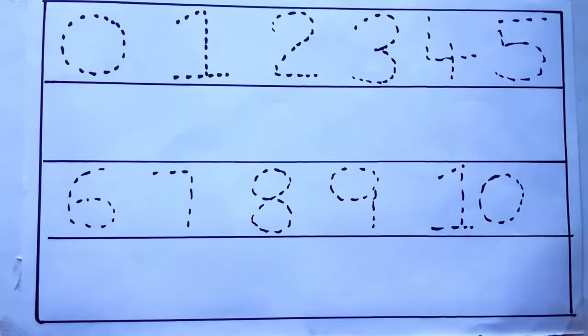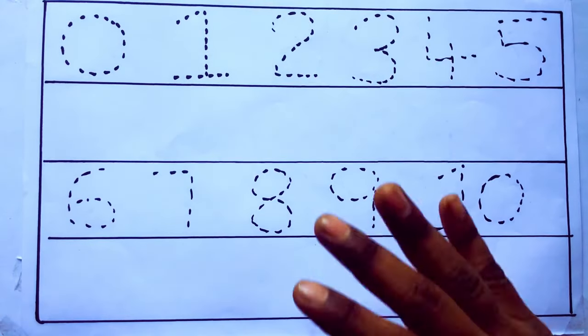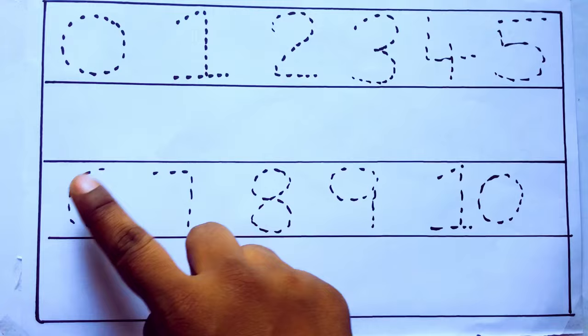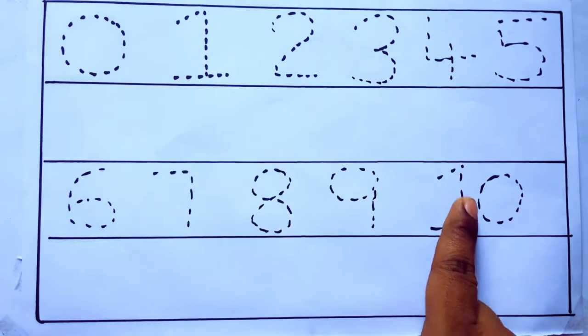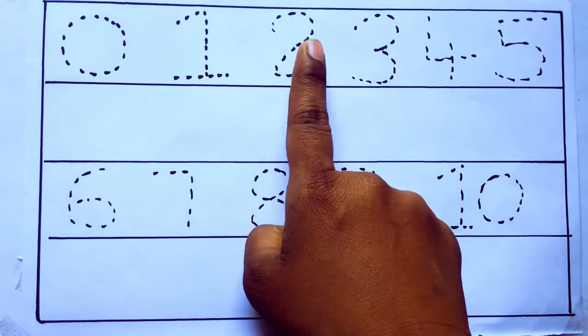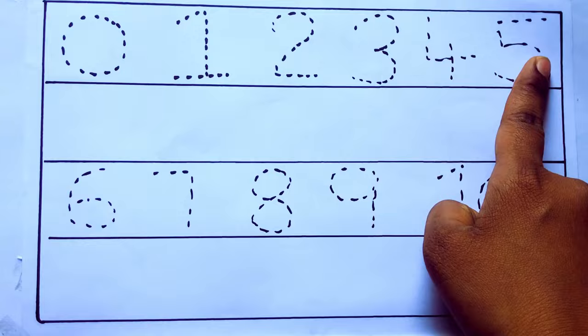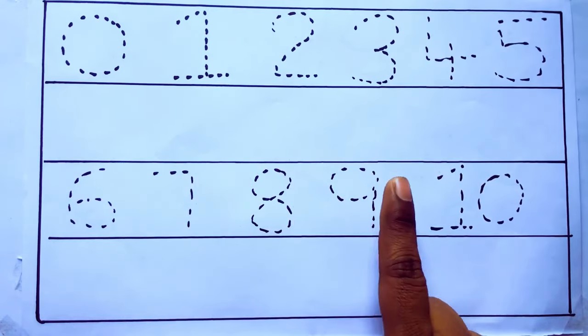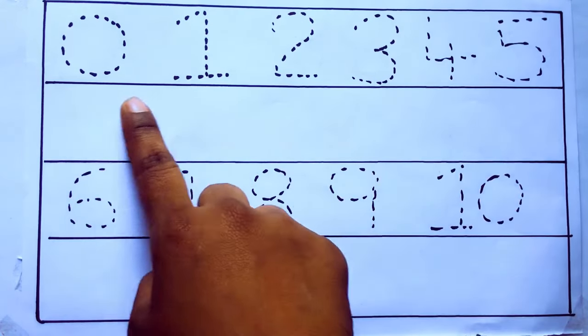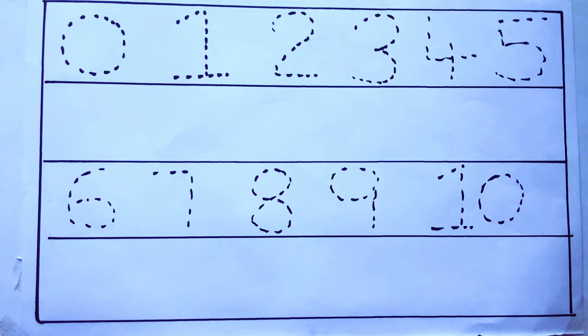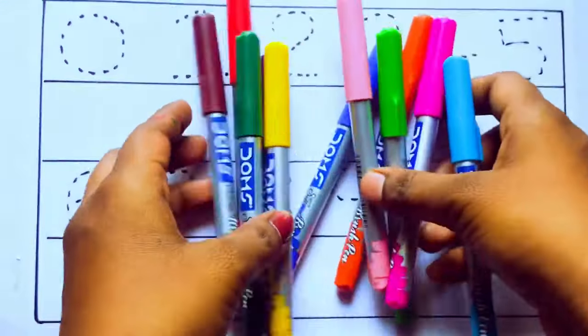Hello kids, how are you? Welcome to our channel. Today we are going to learn numbers 0 to 10: 0, 1, 2, 3, 4, 5, 6, 7, 8, 9, 10. And rewriting the numbers. Let's learn some colors.